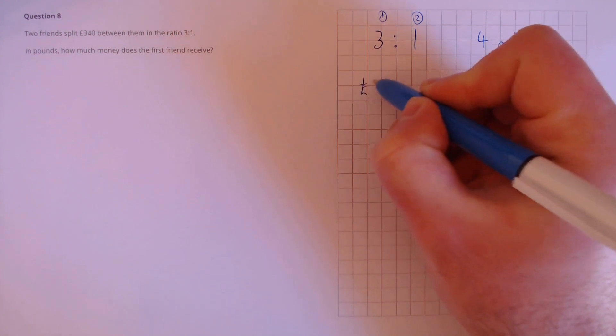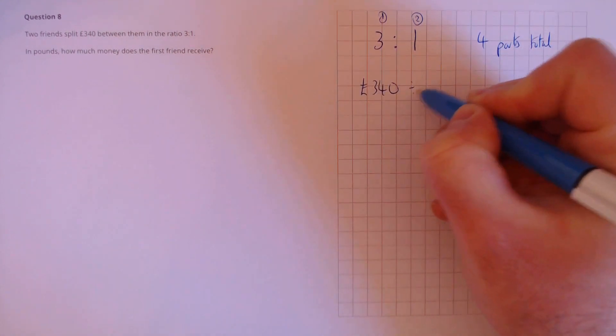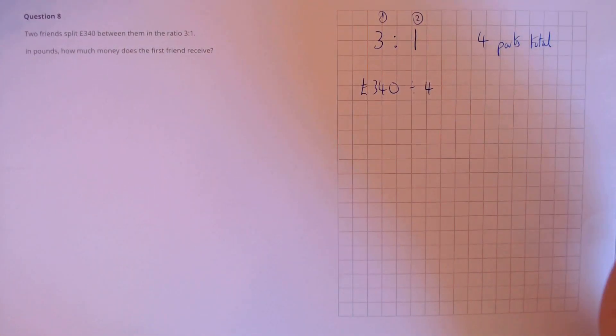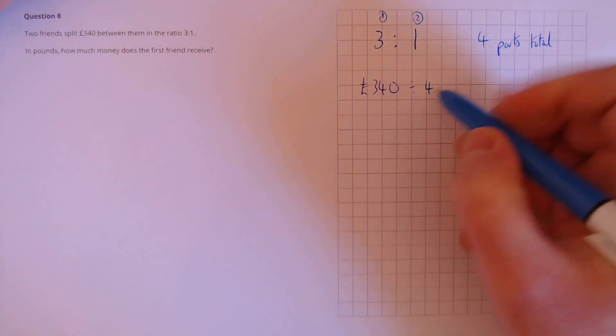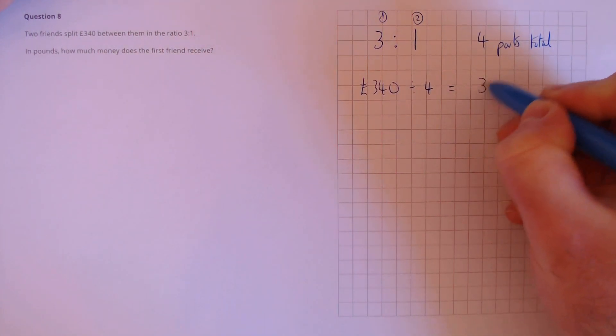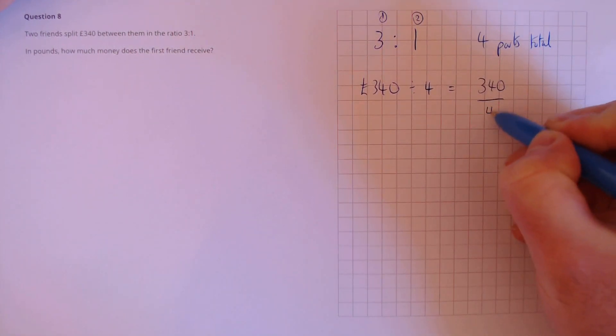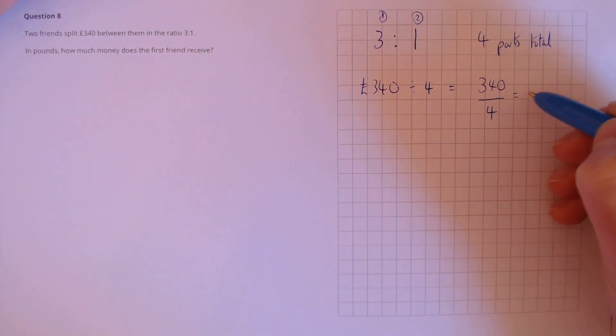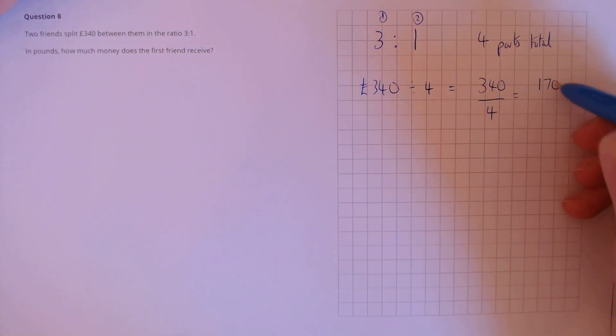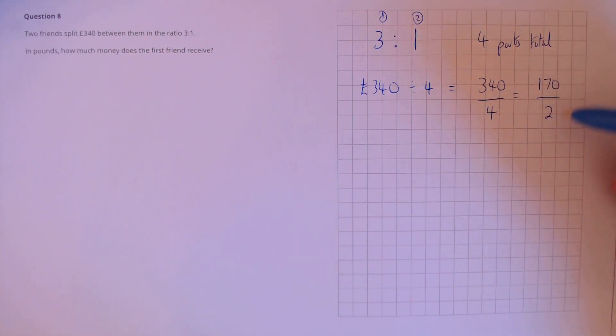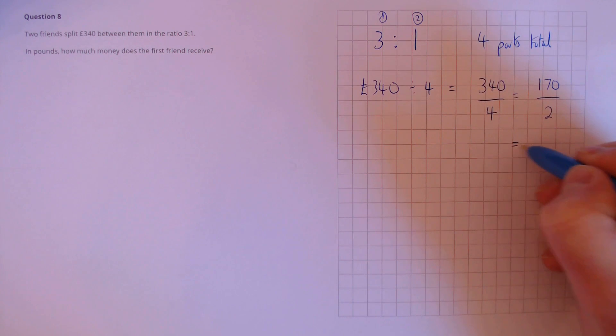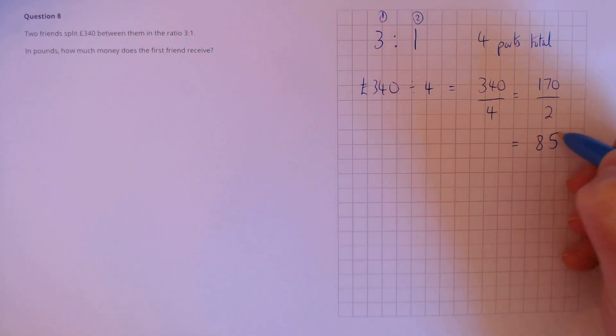First, we need to split the £340 into four parts to find out what one share is worth. So 340 divided by 4. We'll write that as a fraction, 340 over 4. We can simplify that down to 170 divided by 2, by dividing both by 2. And then we can do this division. 170 divided by 2 equals 85.